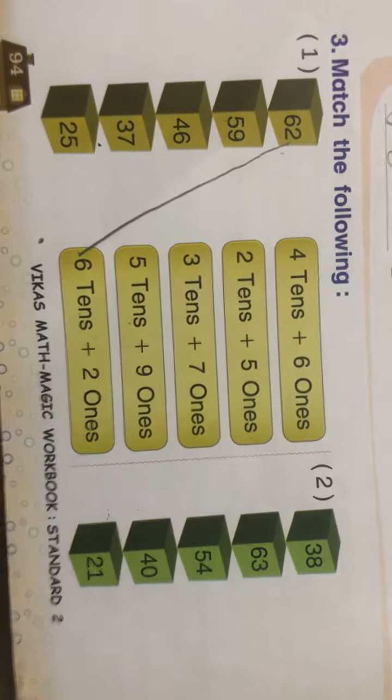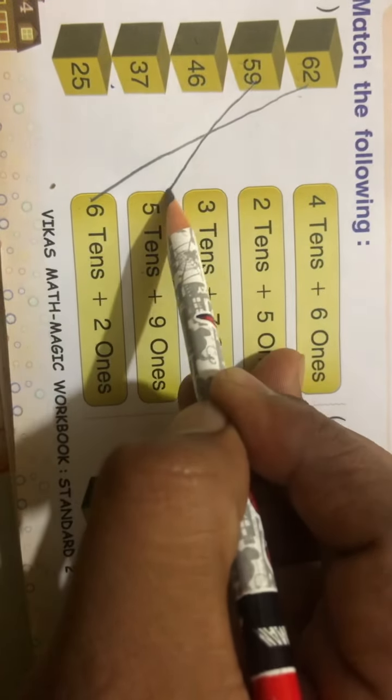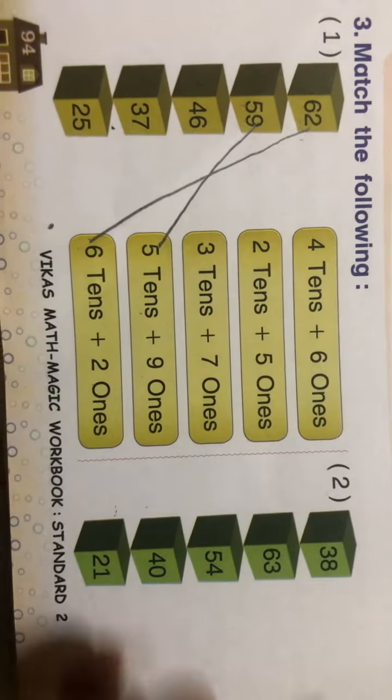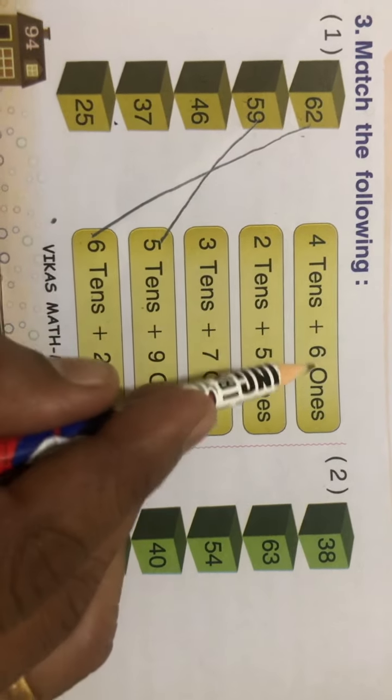So match it here. Okay, same way forty-six: four tens and six ones, so here it is.